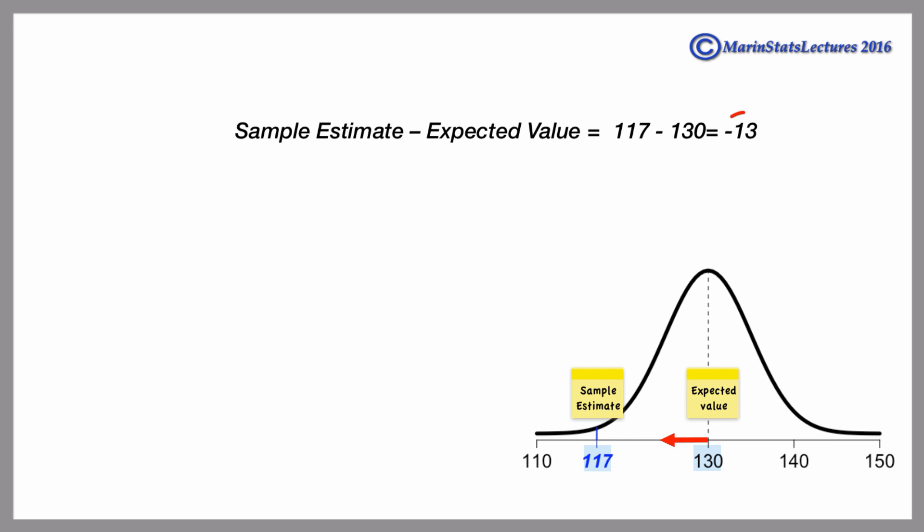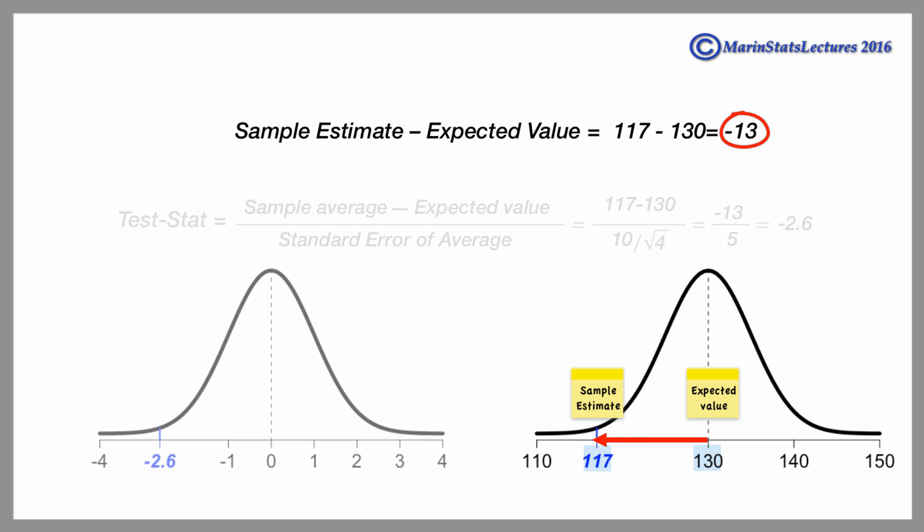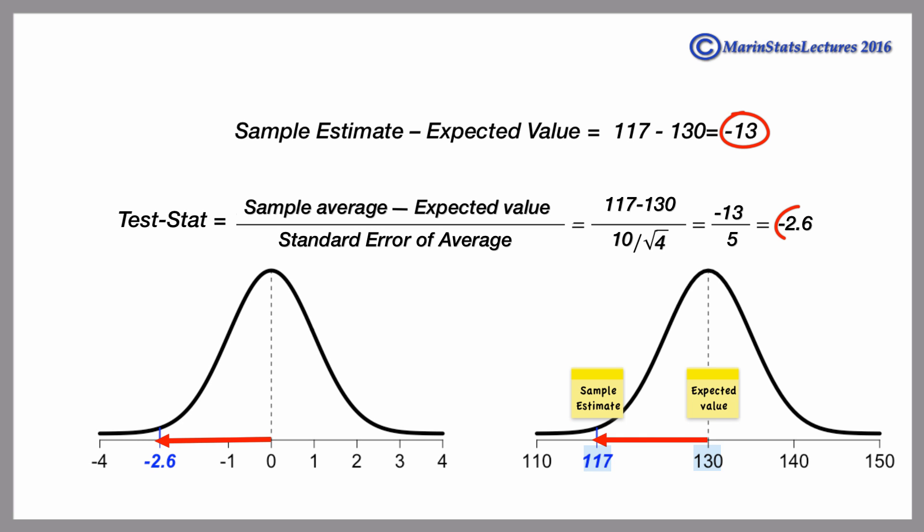His average score is 13 below what we'd expect if the null were true, and in terms of standardized units, his score is 2.6 standard errors below the expected value. In other words, his average score of 117 is more than 2.5 times the typical deviation below what we'd expect.